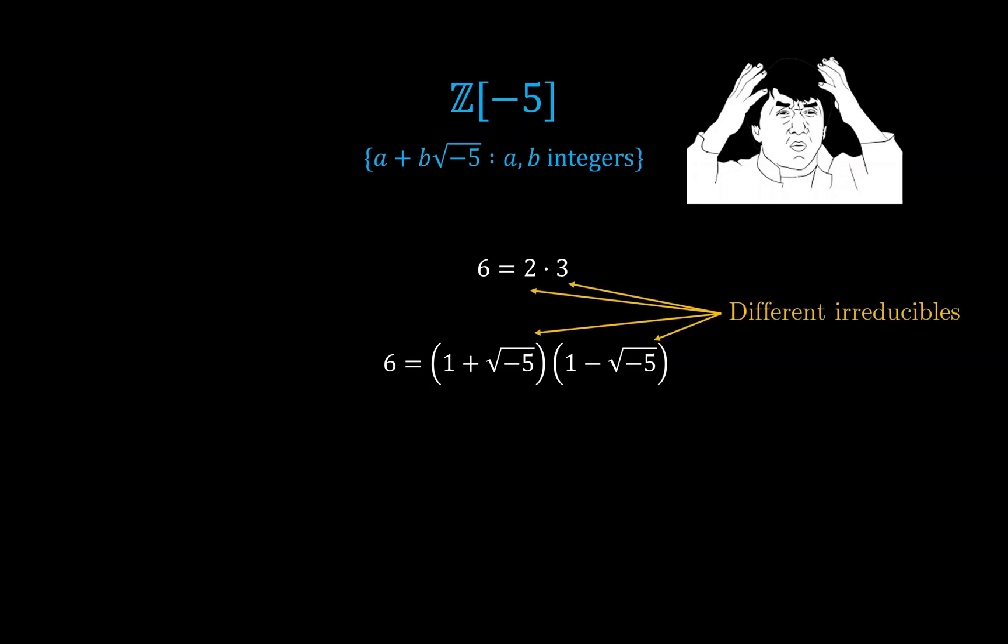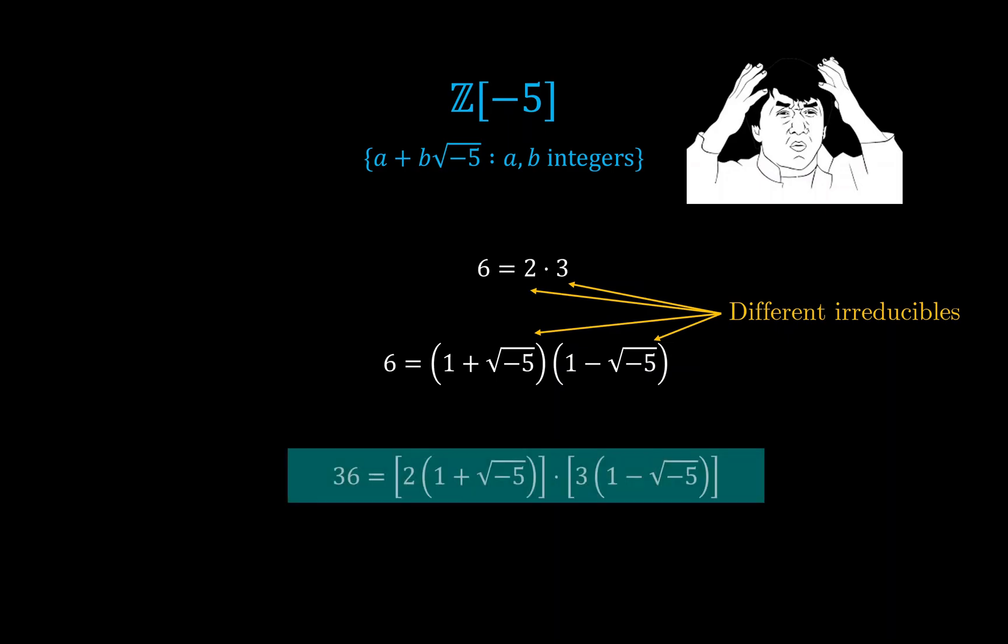What's mind-boggling here is that we can write 6 as two completely different factorizations. One can check that 2, 3, 1 + √(-5) and 1 - √(-5) are all irreducible and they cannot be interconverted by multiplying some element of this funky set. So they are indeed different irreducibles.